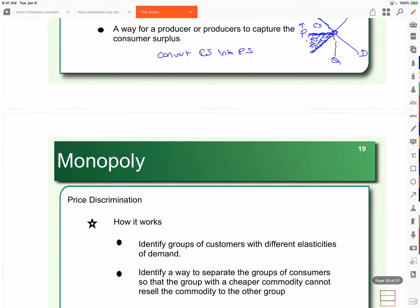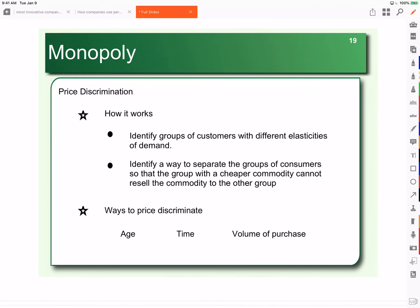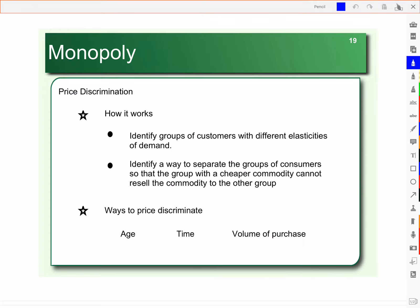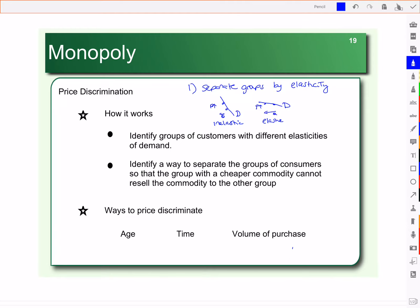In order to price discriminate, we need to identify and separate our customers. Step one: we need to separate groups by elasticity. We have elastic and inelastic demand. If your demand curve is steep, that is inelastic — they're not very sensitive to price change. If you raise the price, the amount people are willing and able to buy changes a little. In comparison, if we have elastic demand and you raise the price, the amount people are willing and able to buy changes a lot.